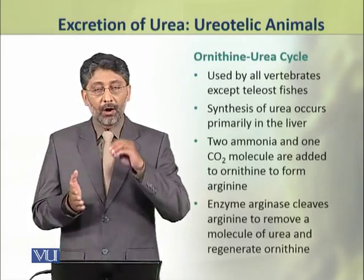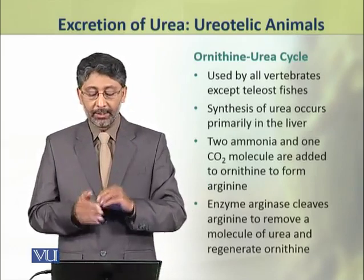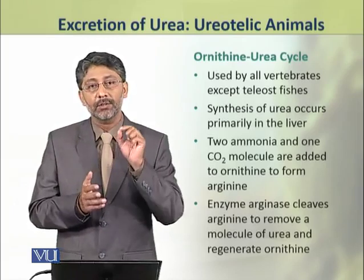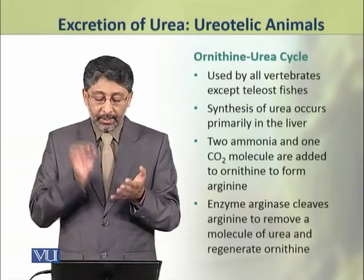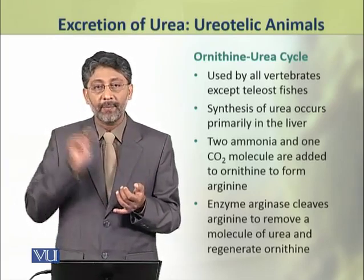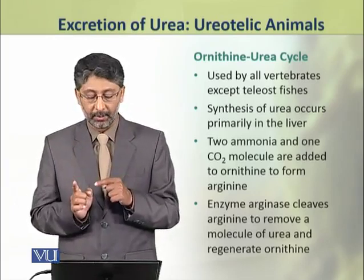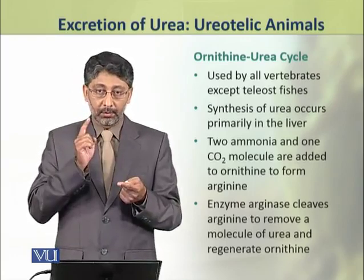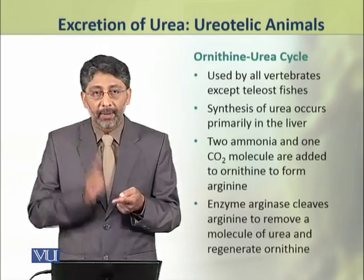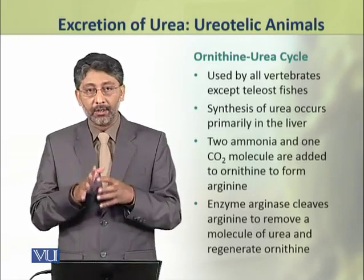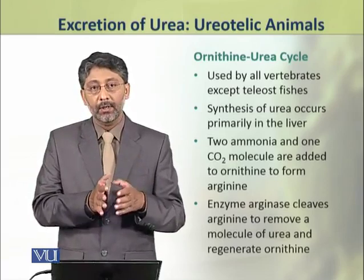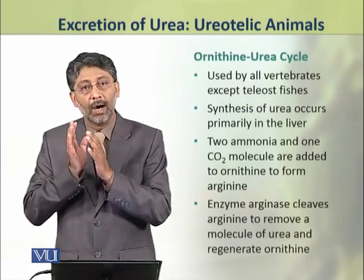The ornithine urea cycle is used by all vertebrates except the teleost fishes. In this method, synthesis of urea occurs primarily in the liver. Two molecules of ammonia and one molecule of carbon dioxide are added to an ornithine molecule, which is then converted into arginine.